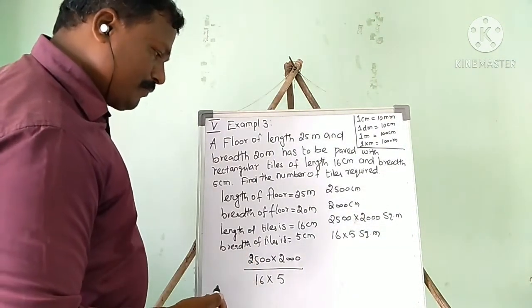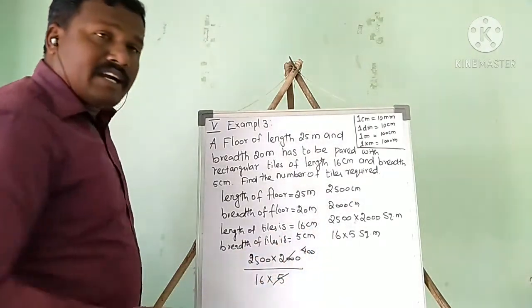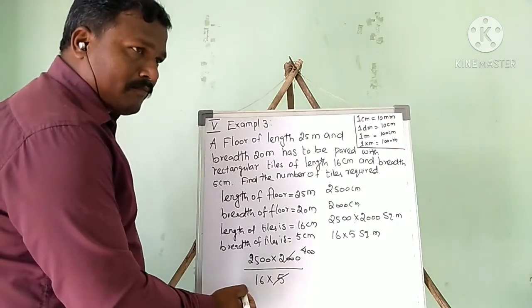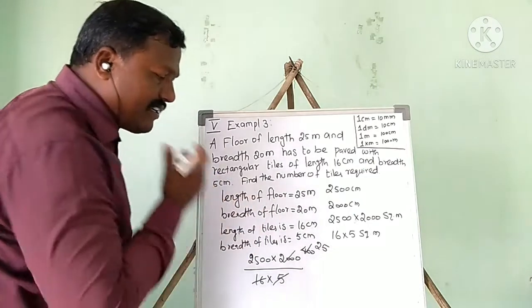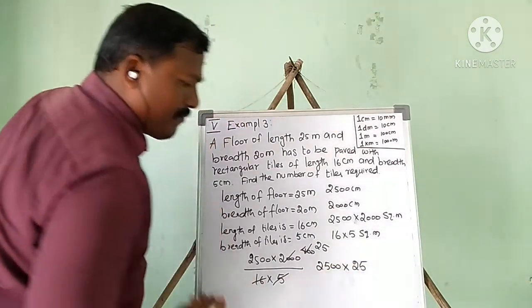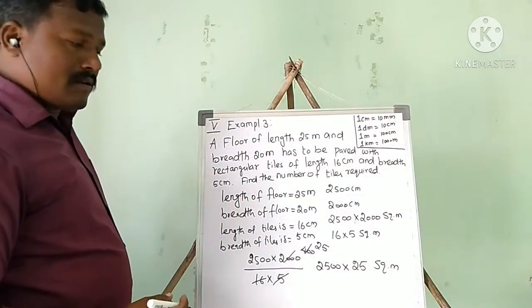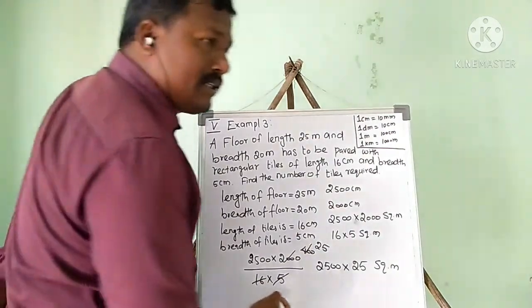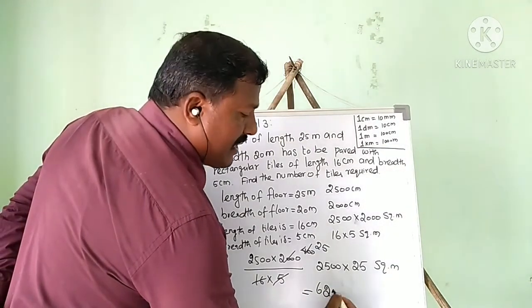So we have: 2500 multiplied by 2000, all divided by 16 multiplied by 5. First, divide 2000 by 5 — that gives 400. Then we need to divide by 16. We know that 25 multiplied by 16 equals 400, so 2500 divided by 16 gives us 25. Multiplying these together: 400 multiplied by 25 equals 10,000 — and continuing the calculation we get 62,500 tiles.